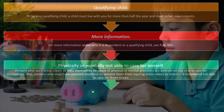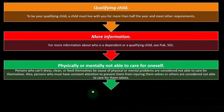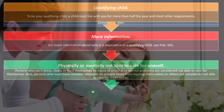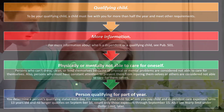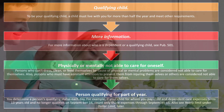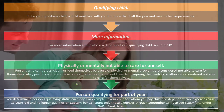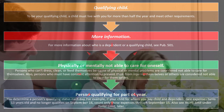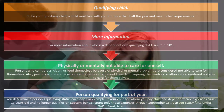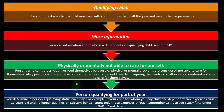Persons who can't dress, clean, or feed themselves because of physical or mental problems are considered not able to care for themselves. Also, persons who must have constant attention to prevent them from injuring themselves or others are considered not able to care for themselves. You determine a person's qualifying status each year. For example, if your child for whom you pay child and dependent care expenses turns 13 on September 16th, count only those expenses through September 15th.